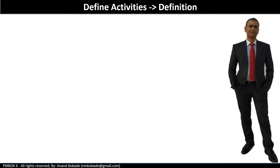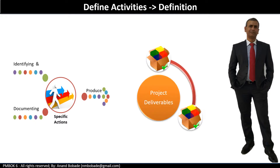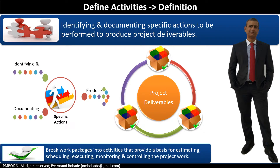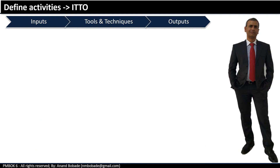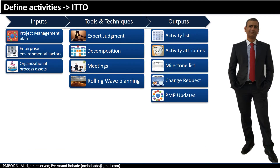Let's take a look at the process definition. Define activities is a process of identifying and documenting specific actions to be performed to produce project deliverables. The key benefit of this process is it breaks down work packages into activities that provide a basis for estimating, scheduling, executing, monitoring, and controlling the project work. Let's go through inputs, tools and techniques, and outputs.